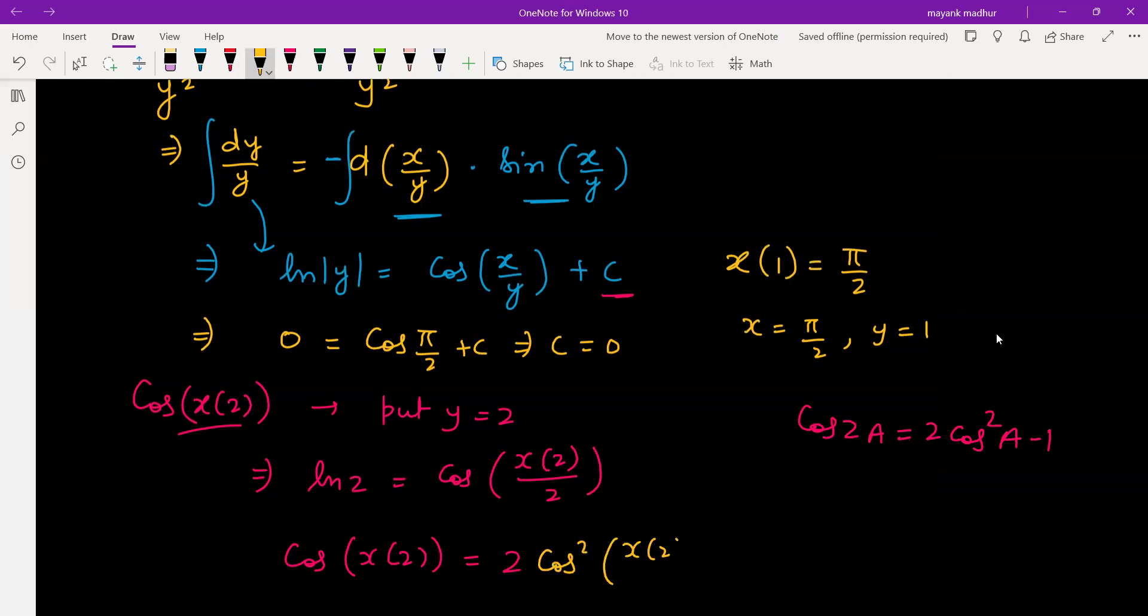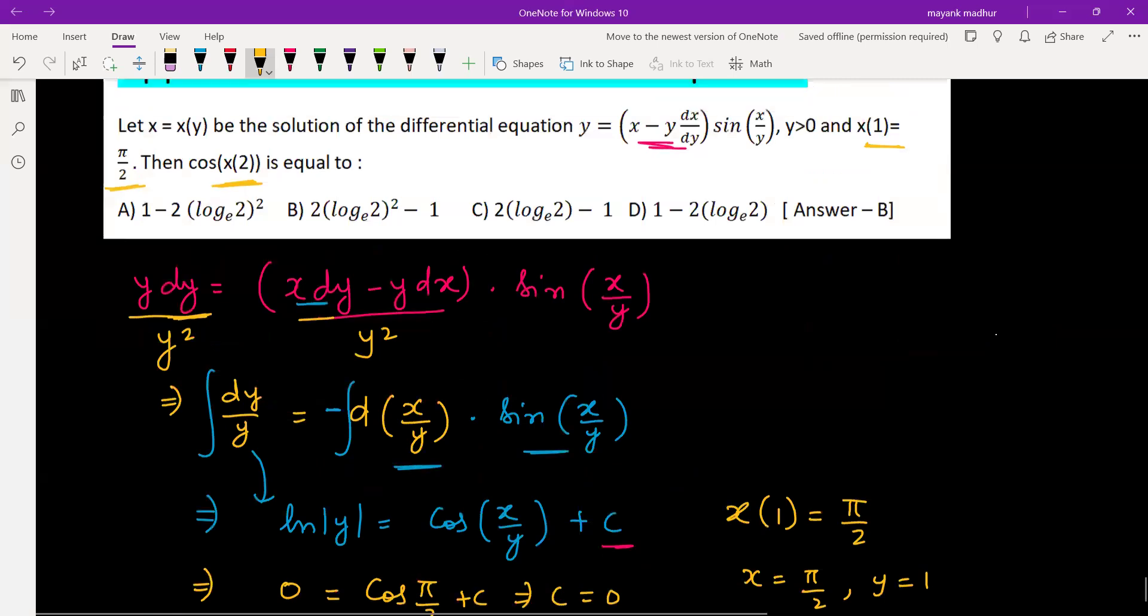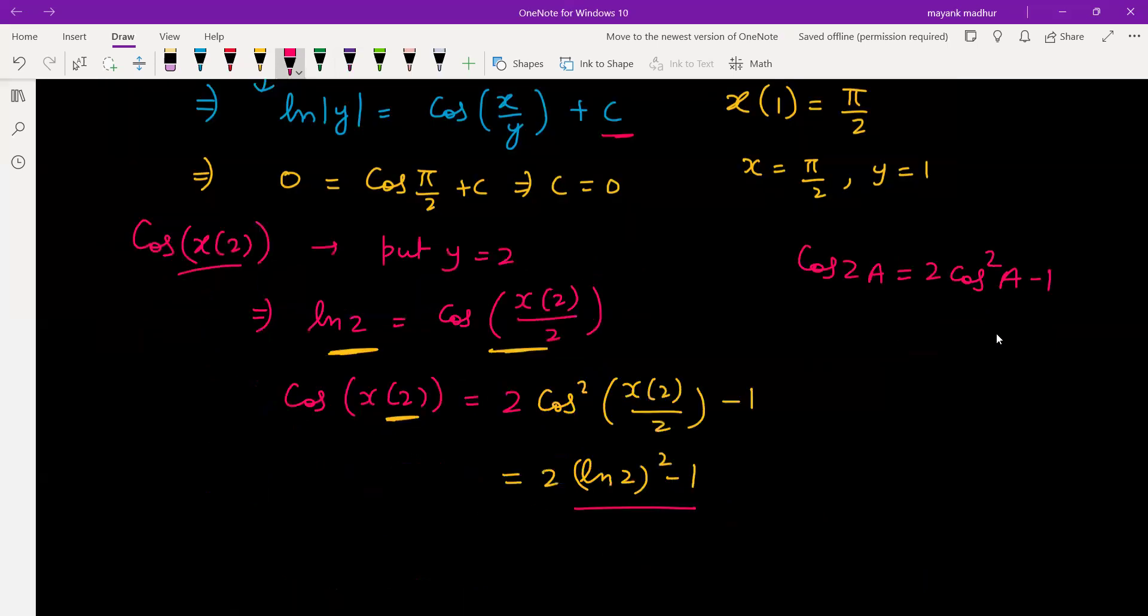If you're considering this angle is θ minus 1, just plug the value of cos(x/2) which is ln(2). So I'm assuming 2(ln 2)² minus 1. Let's check the answer. Answer is given as option B which is 2(ln 2)² minus 1 and we are also getting the same thing.